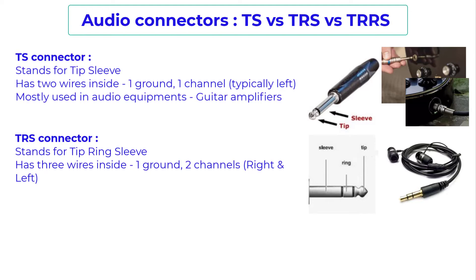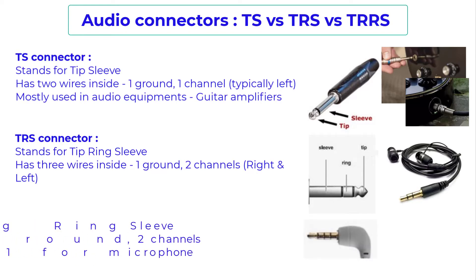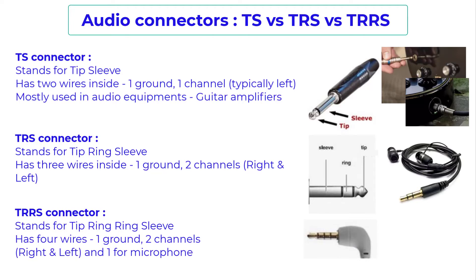Now moving on to the last connector, which is a TRRS connector. It has two rings, and these connectors have four wires inside: one for ground, two for channels right and left, and an additional one for microphone. You will see these connectors on earphones which have microphone capabilities.